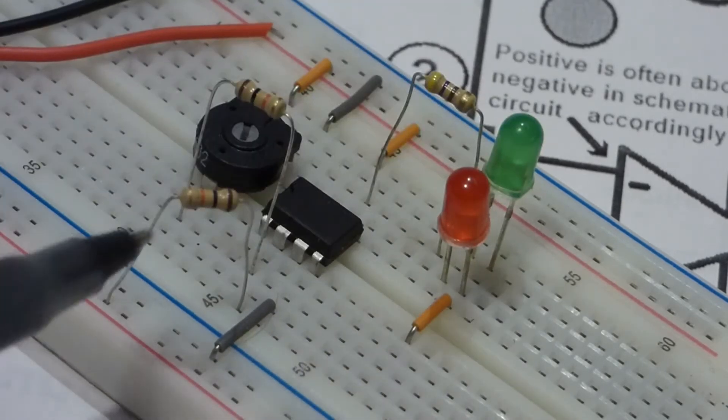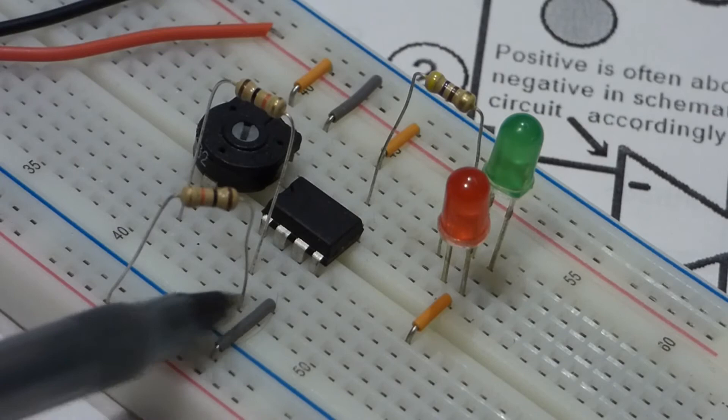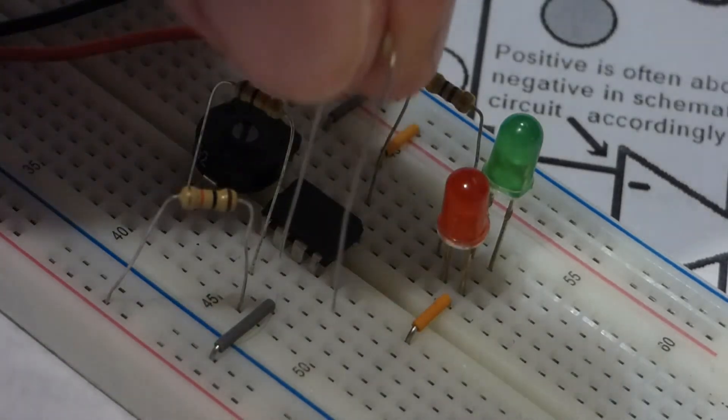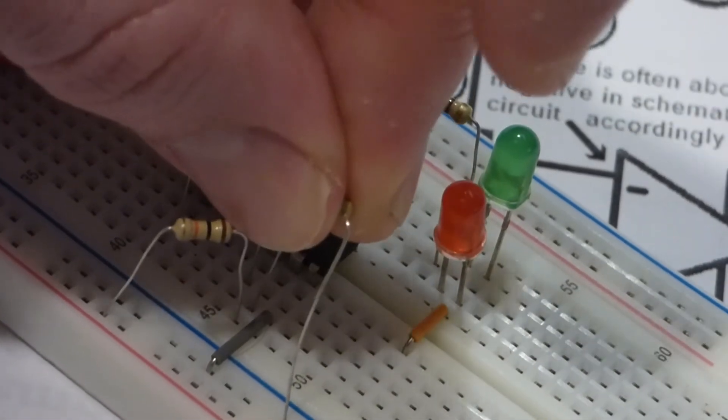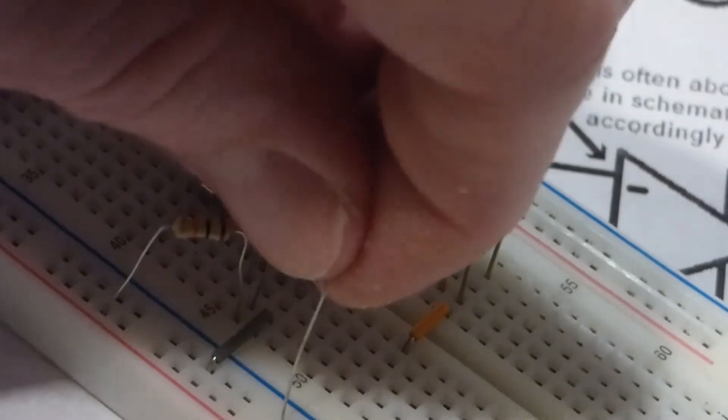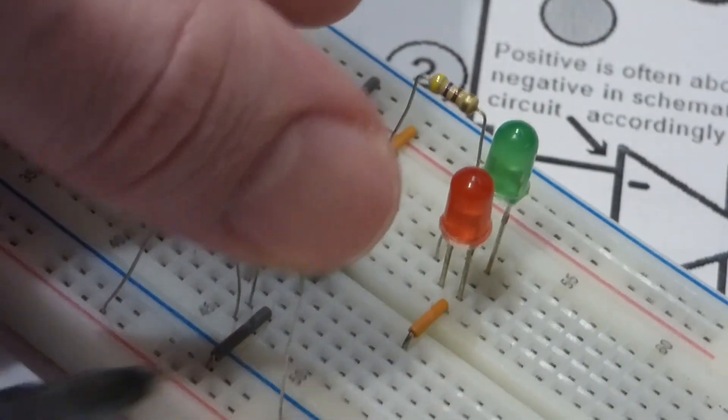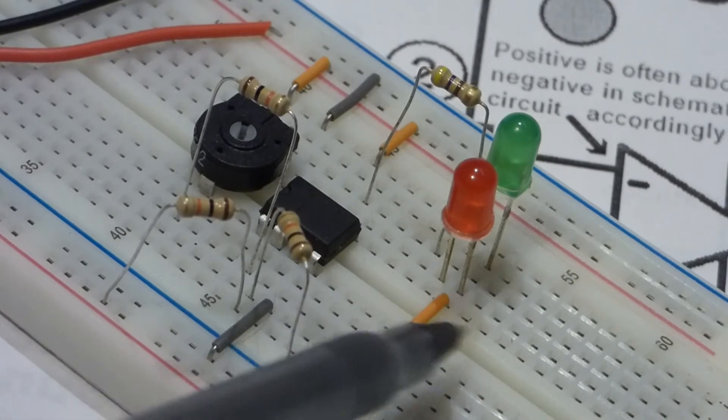This is a 10 kilo ohm resistor, we'll put that one to positive. And now we'll put another 10k ohm resistor to negative. So this is a voltage divider, it cuts the voltage in half which will be the ground.